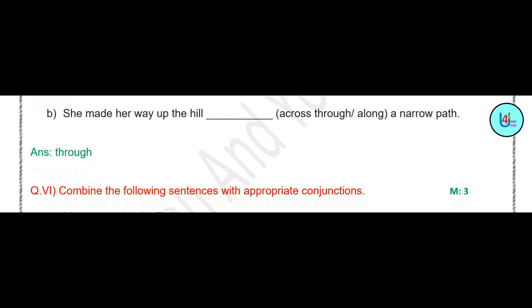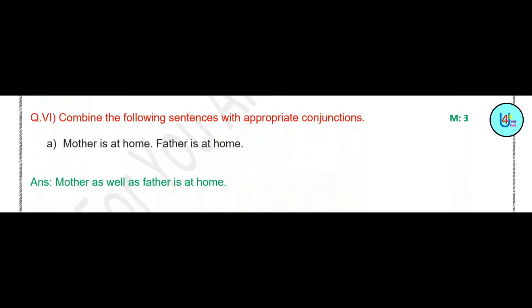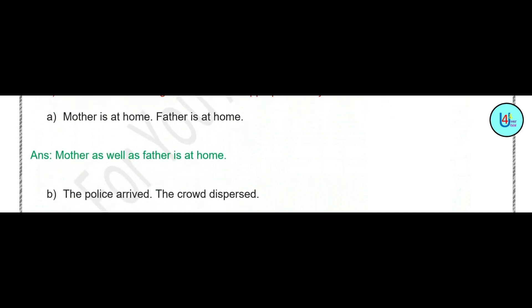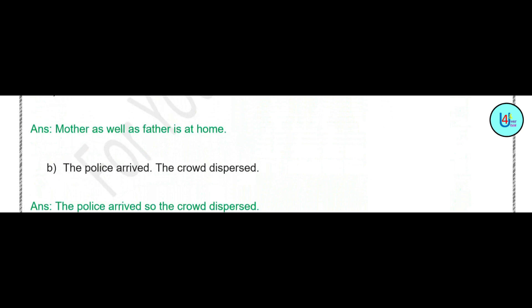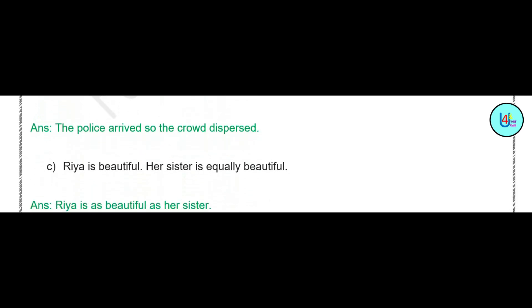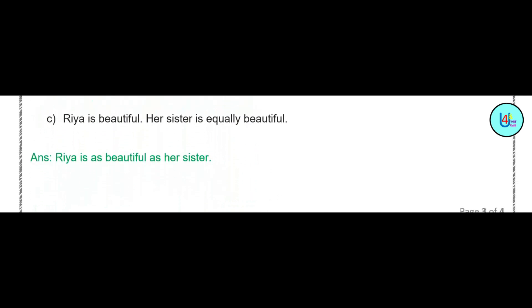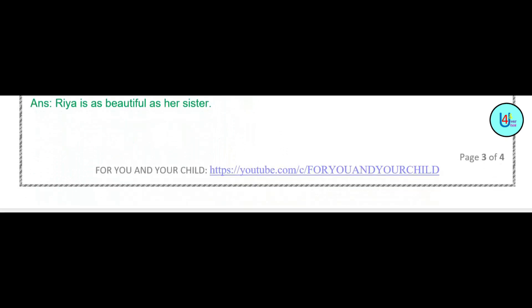Question number 6: combine the following sentences using appropriate conjunctions. 'Mother is at home. Father is at home.' Answer: 'Mother as well as father is at home.' 'The police arrived. The crowd dispersed.' Answer: 'The police arrived, so the crowd dispersed.' 'Rhea is beautiful. Her sister is equally beautiful.' Answer: 'Rhea is as beautiful as her sister.'